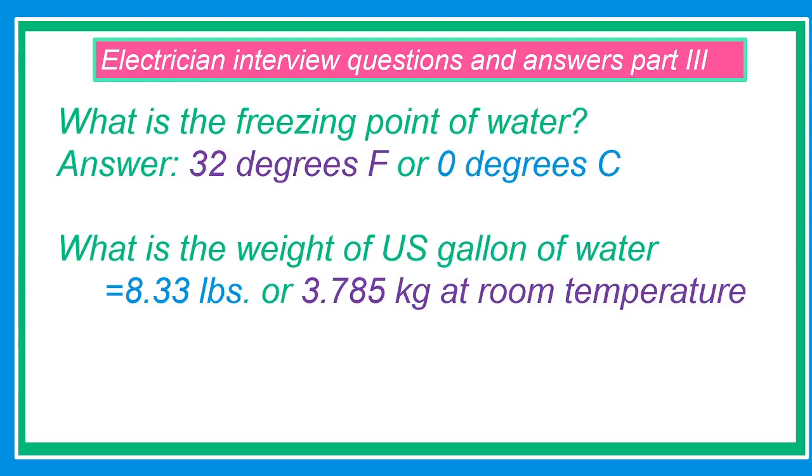What is the freezing point of water? Answer: 32 degrees Fahrenheit or 0 degrees Celsius. What is the weight of a U.S. gallon of water? 8.33 pounds or 3.785 kilograms at room temperature.